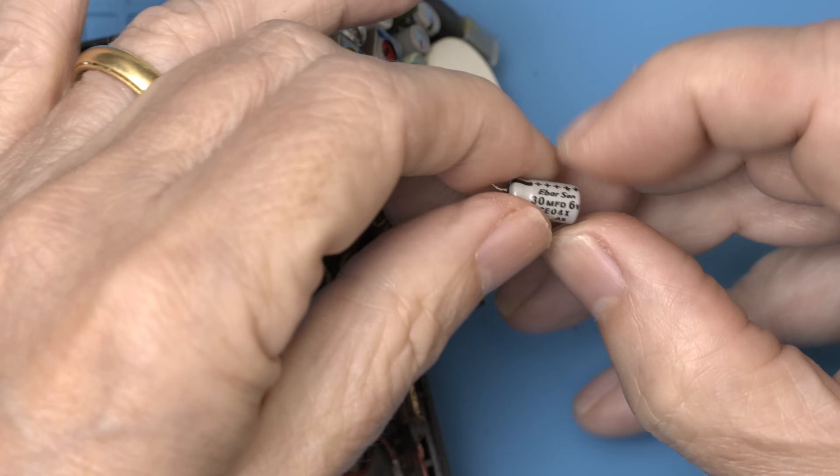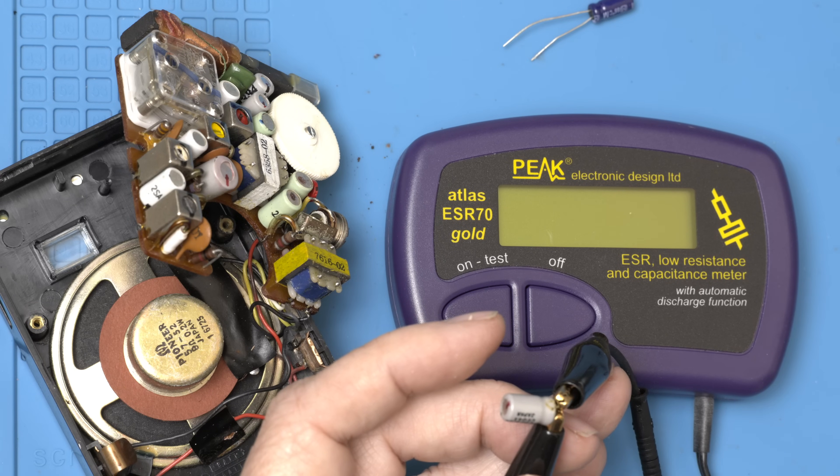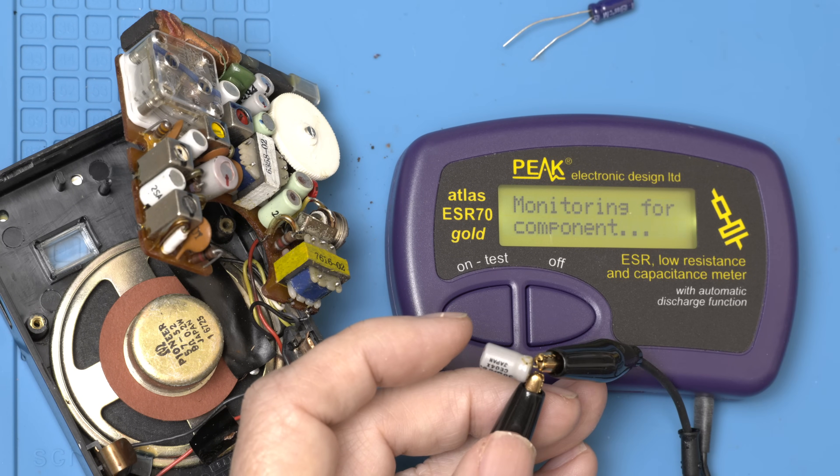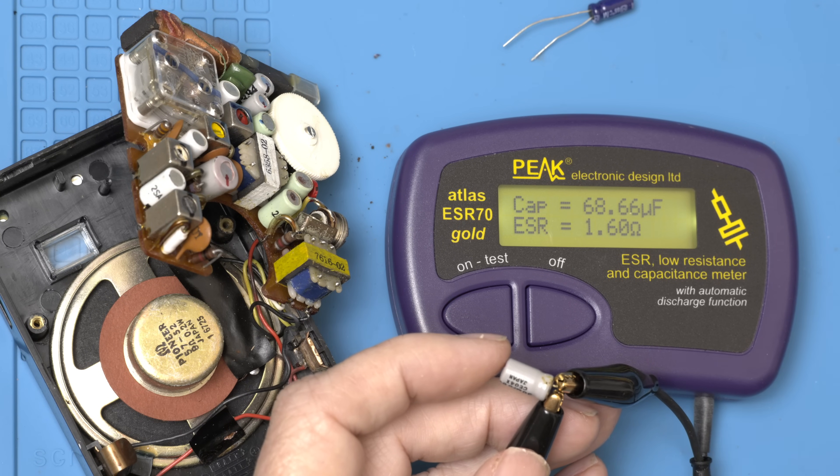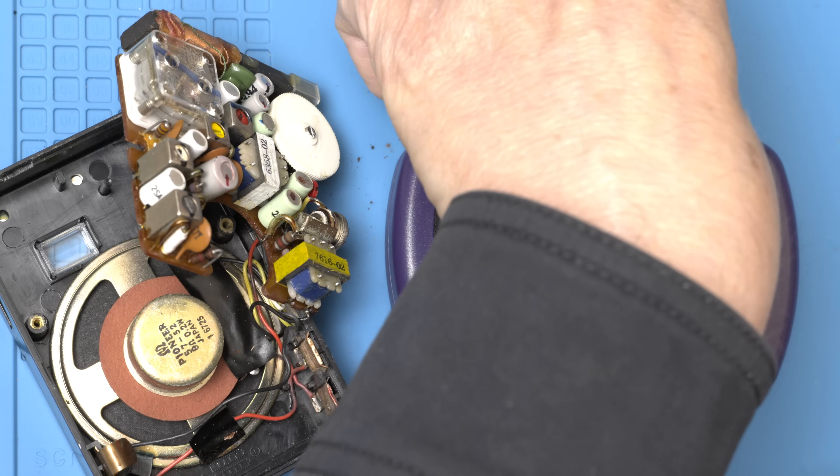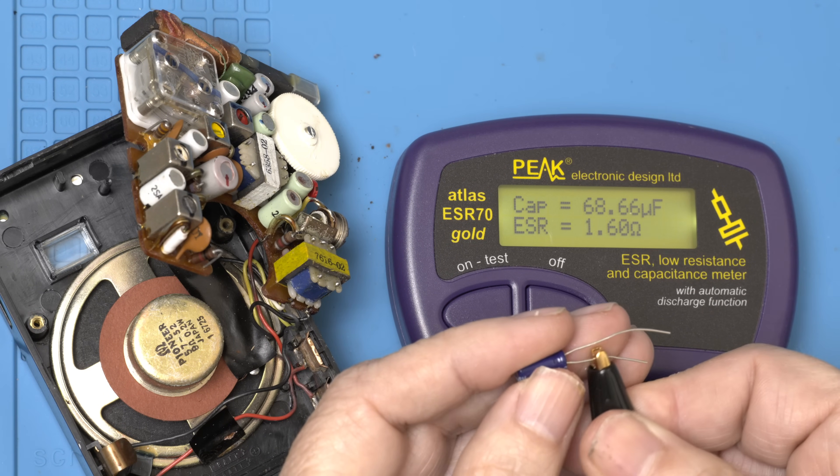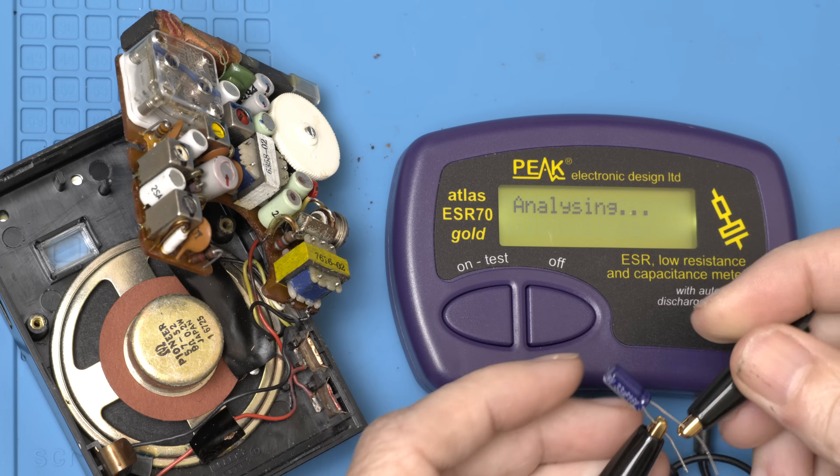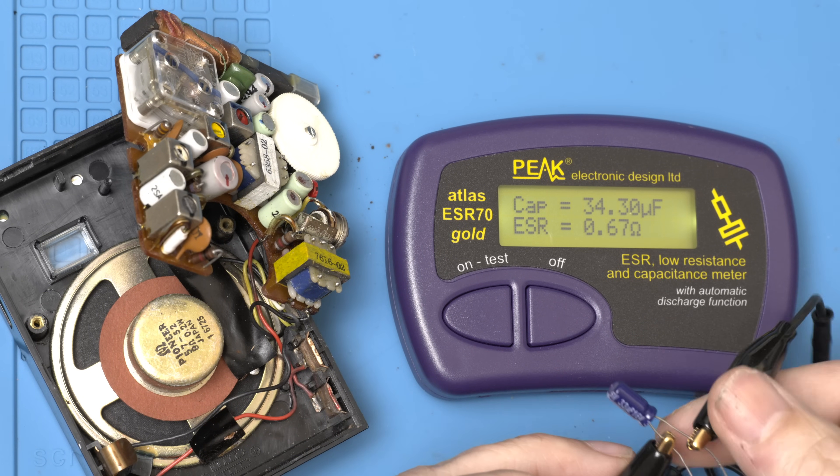There he is. And he is a 30. Let's compare the one we just took out with the one we are going to put in. So the 30 is measuring 70 with an ESR of 1.6. Obviously not ideal. And here is the one we are going to put in, which is 34 and 0.67. So much better.